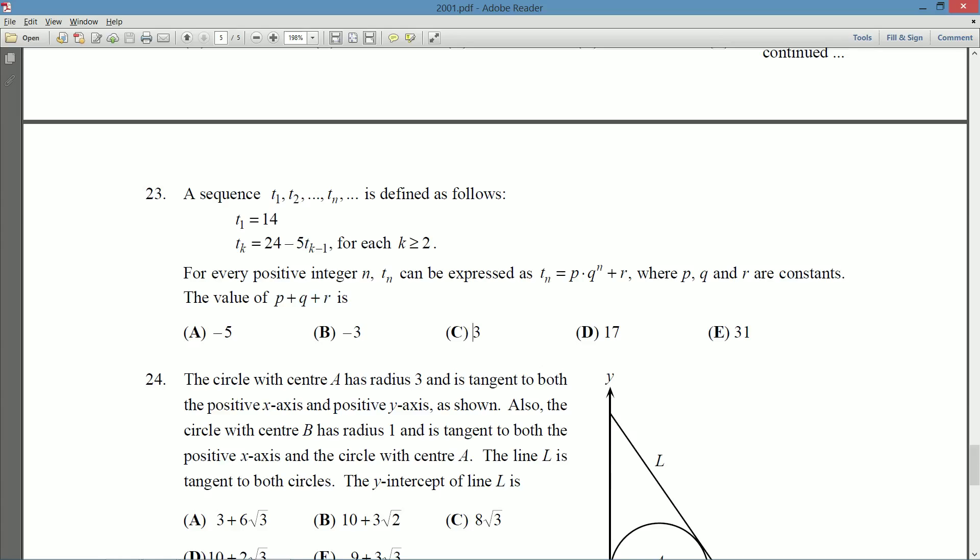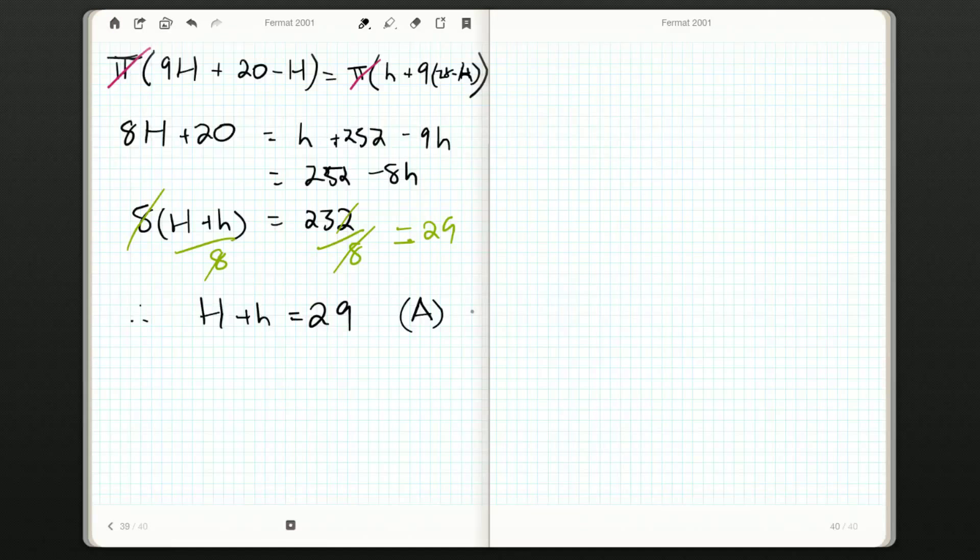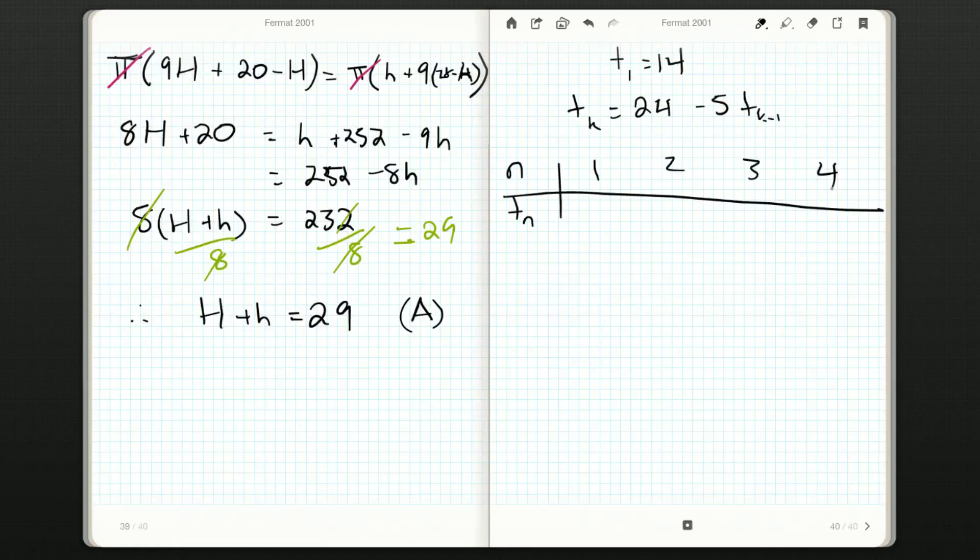Well, we have a sequence, it might be a good idea to maybe try and write out a little bit of the sequence, just so we get a better understanding of what's going on here. So we're told T1 is 14, Tk is 24 minus 5 Tk minus 1. So if we had n, Tn, one, two, three, four, we'll just do a couple of them. So we're starting off with 14, and then we need 24 minus 5 times 14.